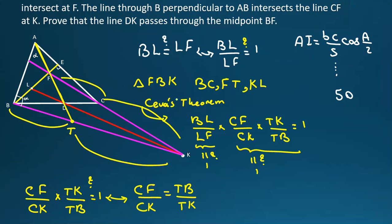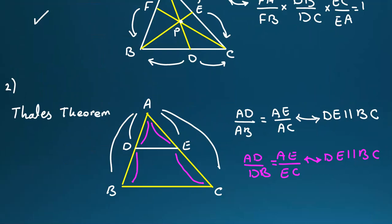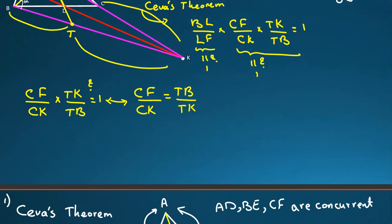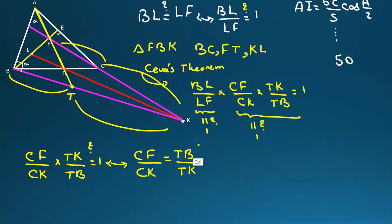So we should prove CF over CK equal to TB over TK. Now in the beginning of the video, I said Thales theorem. I said if this over this equal to this over this, the corresponding, it is equivalent that DE is parallel to BC. So we should prove what? But by this one, I should prove that BF is parallel to CT.